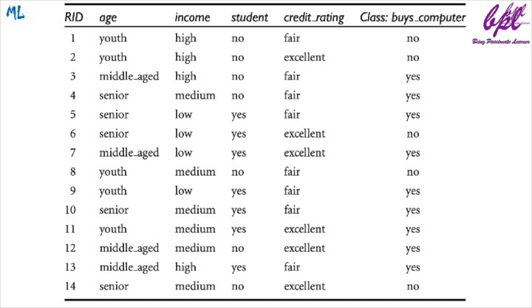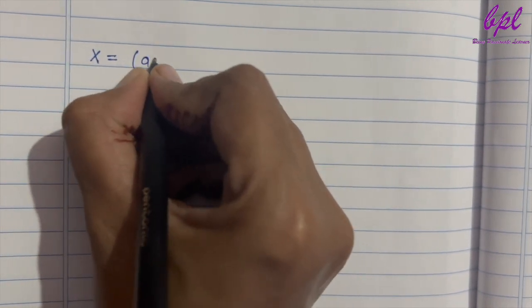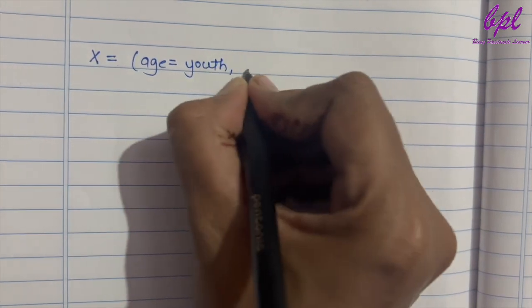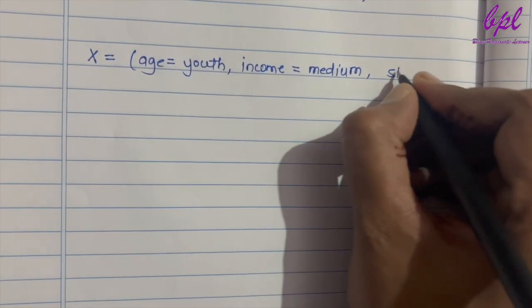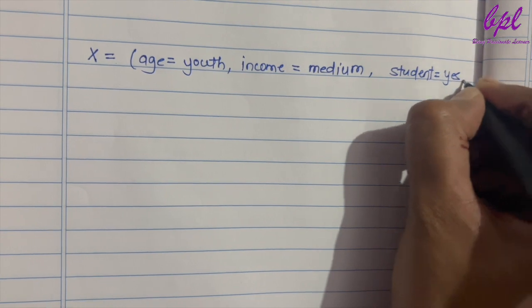The slide shows a training dataset of class-labeled observations randomly selected from the All Electronics customer dataset. Each feature is a discrete value. The class label 'buys computer' is also discrete and has two distinct values: yes and no. Therefore, class C1 corresponds to yes and class C2 corresponds to no. We want to classify the observation X: age = youth, income = medium, student = yes, credit rating = fair.